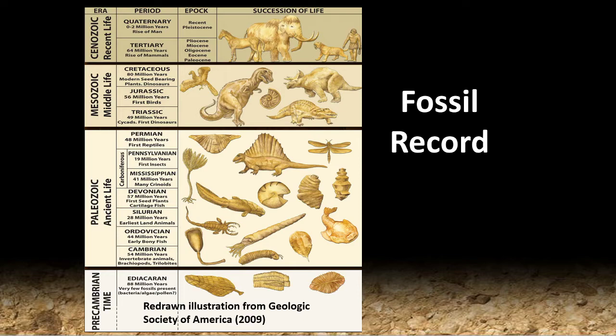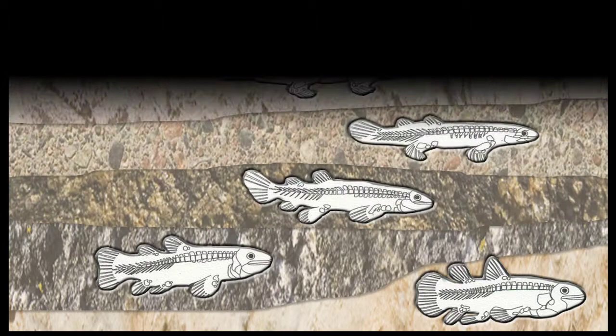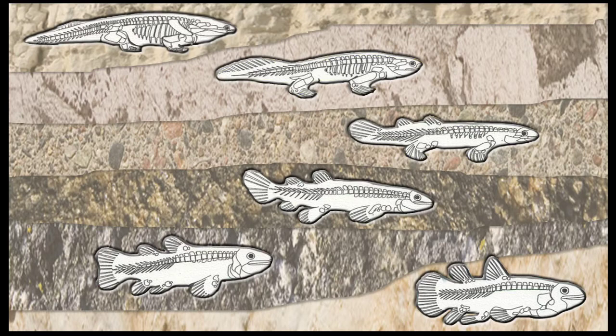Because fossils are typically found below or above other types of fossils, as shown in this chart, evolutionists argue that this arrangement shows that life on earth has changed over time. However, for the fossil record to really support evolution, it must show an organism in the process of evolving from one type into another. The fossil record should be filled with intermediate fossil types called transitional forms.